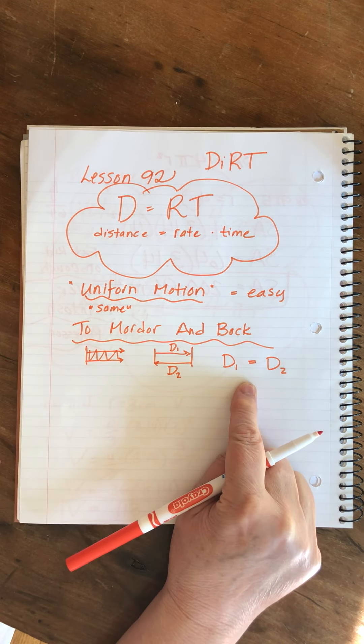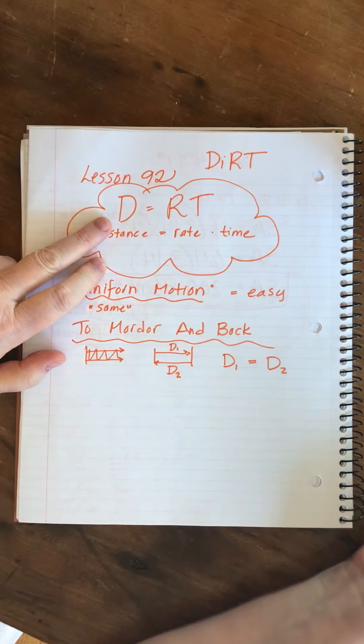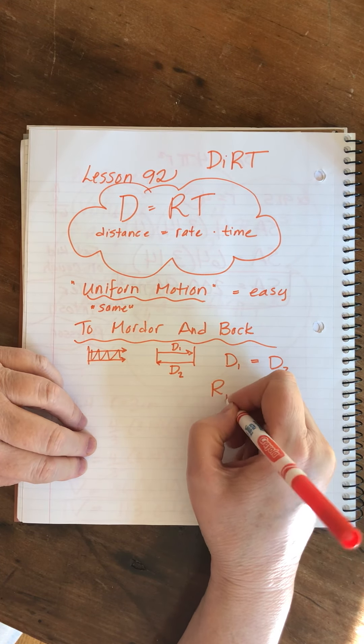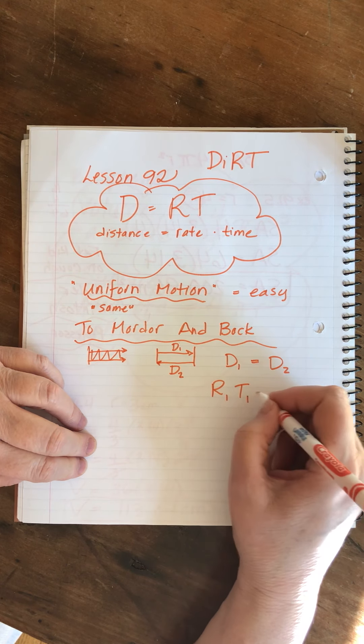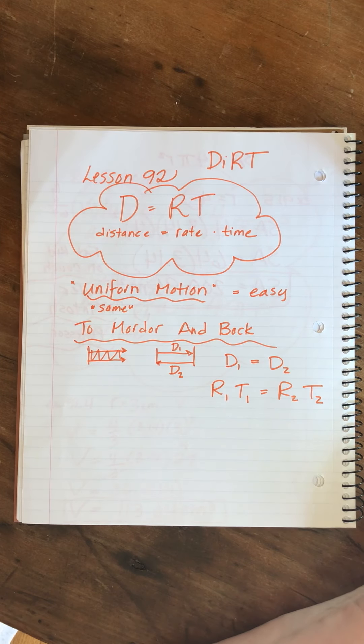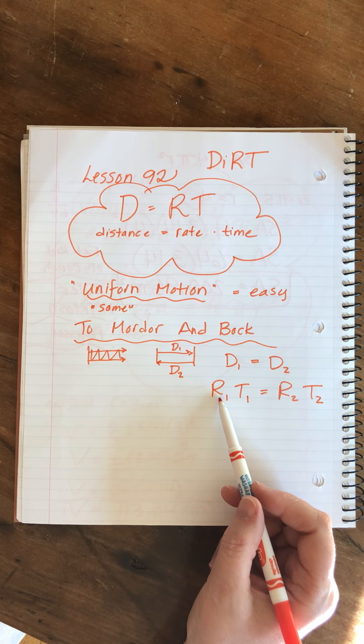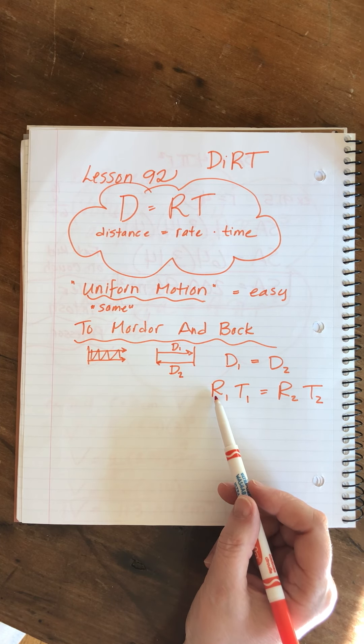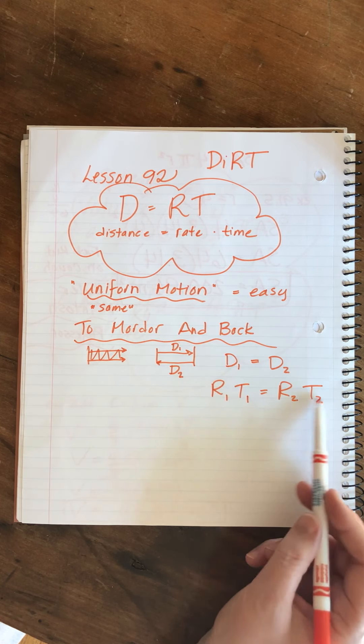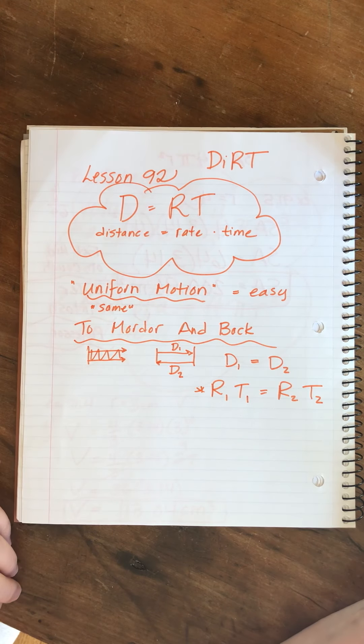This is a picture of it. This is the same idea written in equation form. Now, we also told ourselves up here that distance equals rate times time. So, we can change this to say the first rate times the first time is equal to the second rate times the second time. This is what we need to know. This is our base equation for doing these problems.